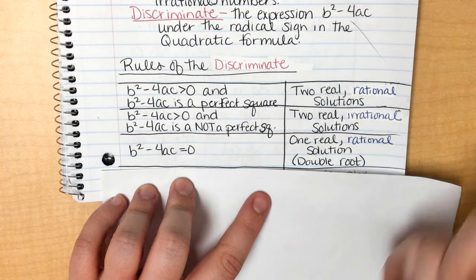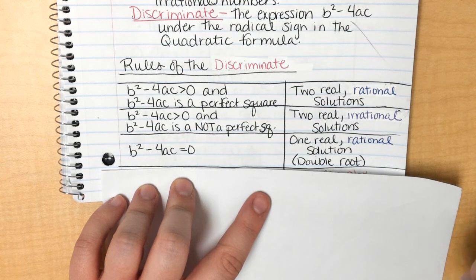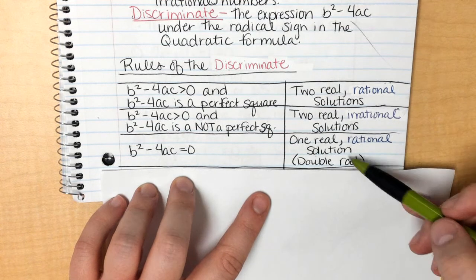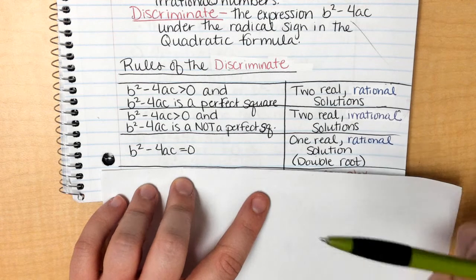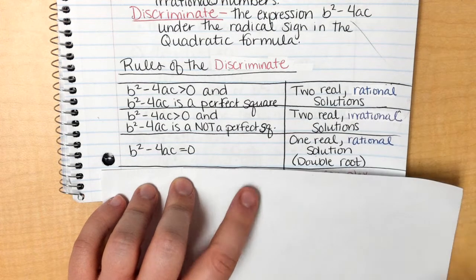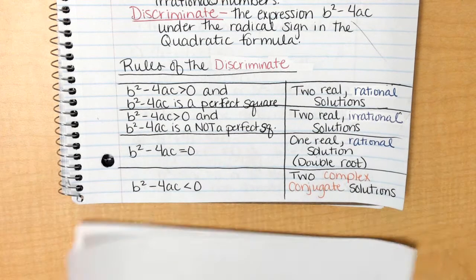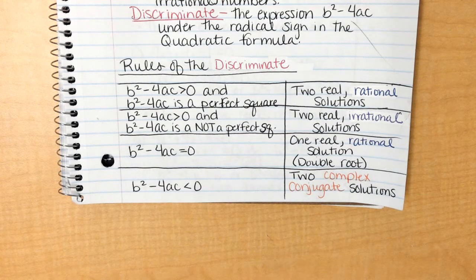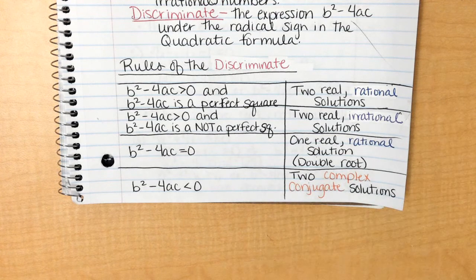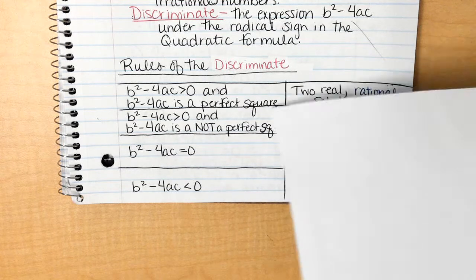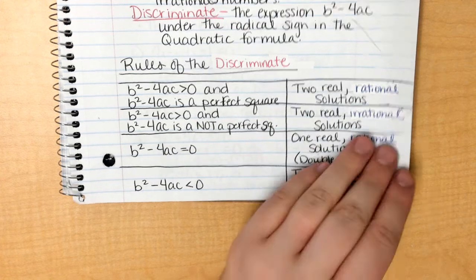Now remember the word root can be exchanged for zero, solution, x-intercept. So it's pretty much just telling me that your solution will end up happening twice but it will only show up once. And then lastly, b squared minus 4ac is less than 0 is two complex conjugate solutions. And you're going to see one of each one of these so that you understand what that means.